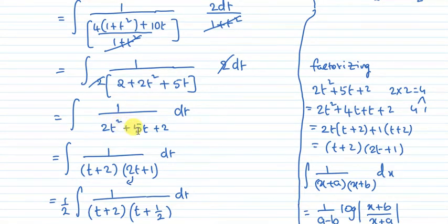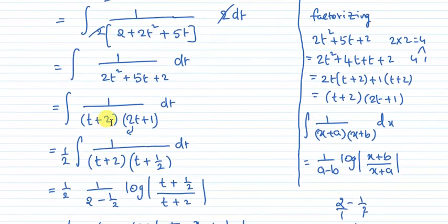This simplifies to integral 1 by 2t square plus 5t plus 2 dt. In the first two terms, take 2t common to get 2t times t plus 2. In the next two terms, take 1 common to get t plus 2. Since t plus 2 is a common factor, we get 2t plus 1.